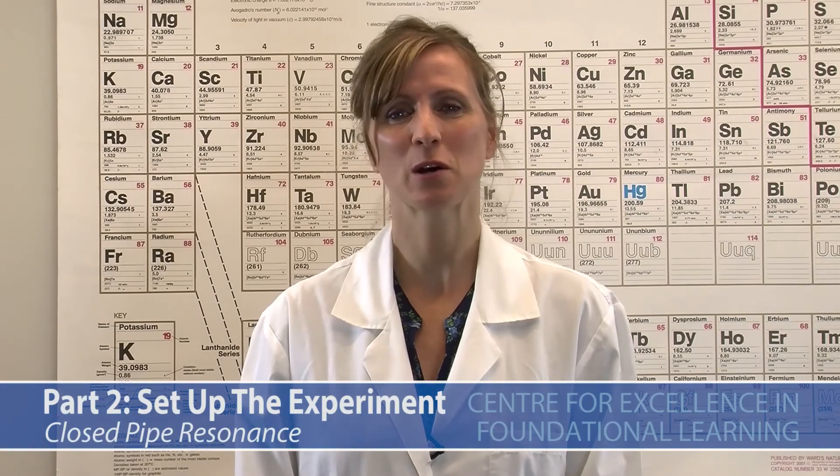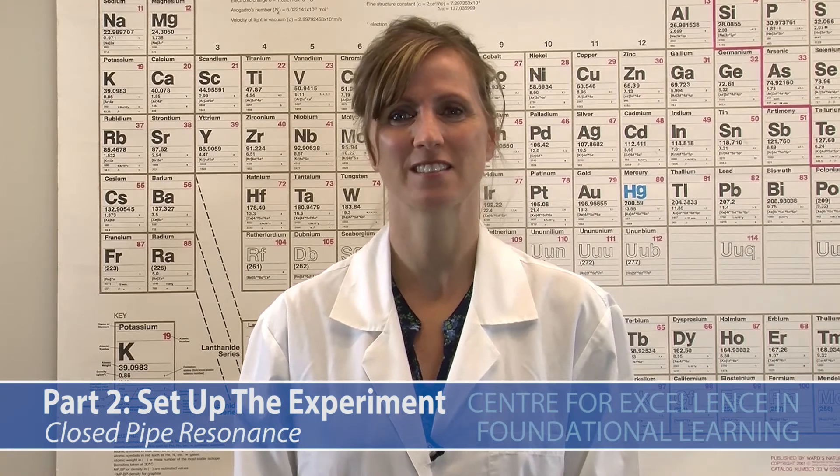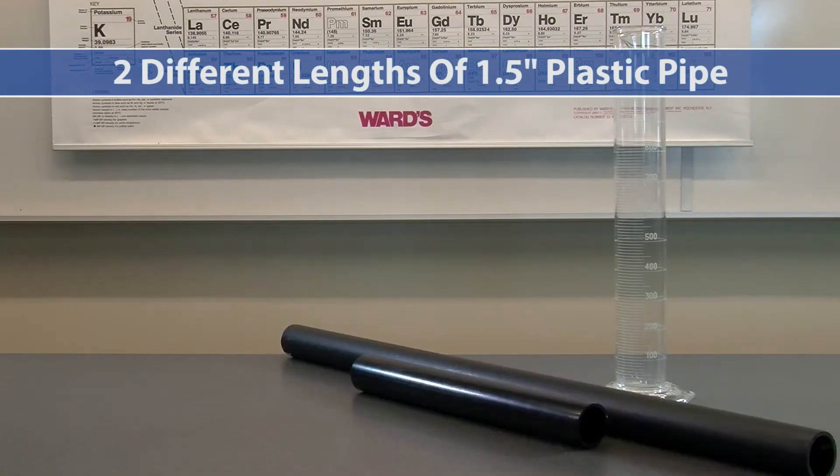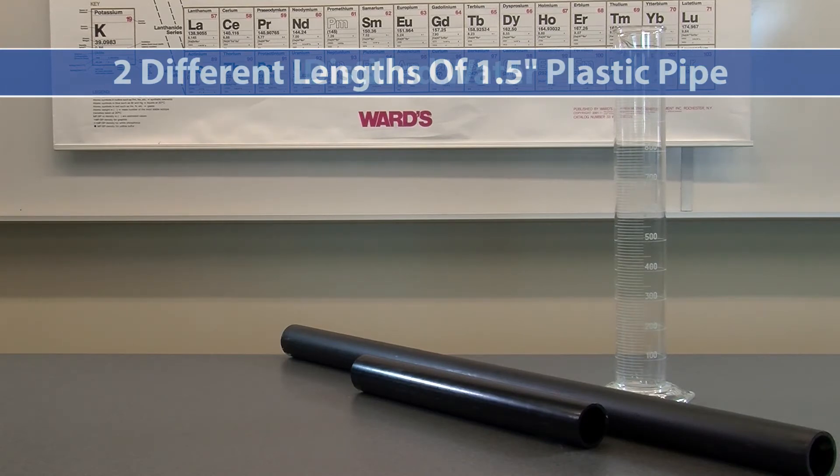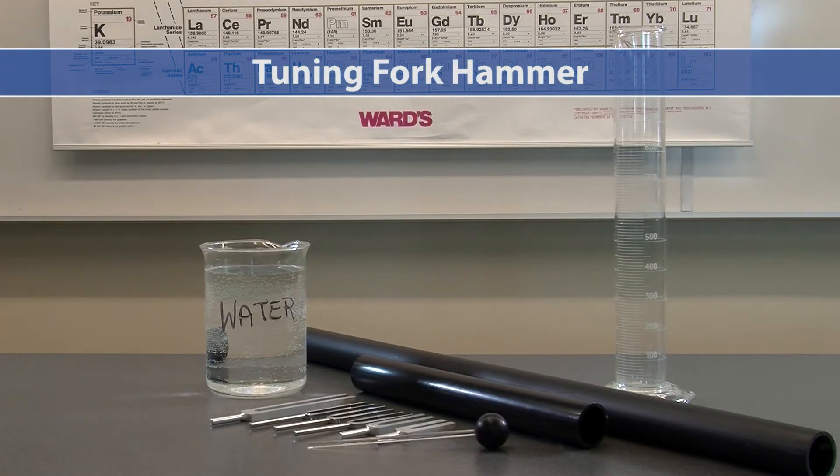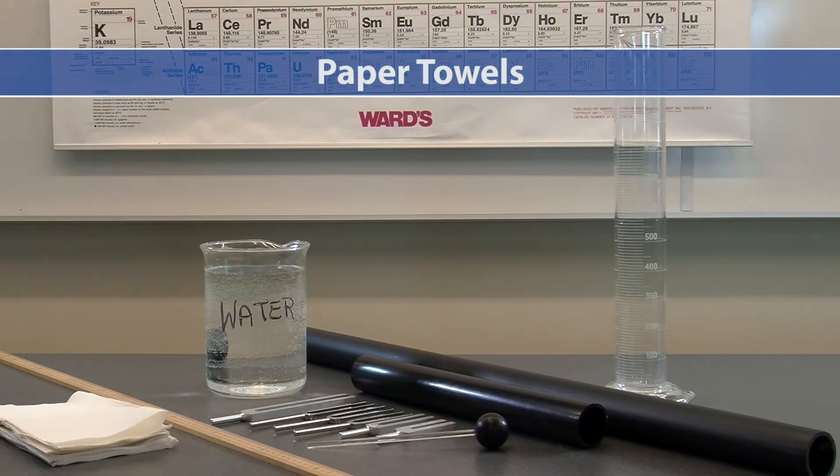To set up the closed pipe resonance experiment, we will need the following materials: a 1000 milliliter graduated cylinder, 2 different lengths of 1.5 inch plastic pipe, water, several tuning forks of varying frequencies, tuning fork hammer, a ruler or yardstick, and paper towels for spills.